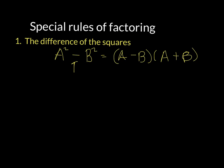So if you have x squared minus four, if you take the square root of each term, the square root of x squared is x and the square root of four is two. So x and two would go in each parenthesis — one will be minus and the other will be a plus.